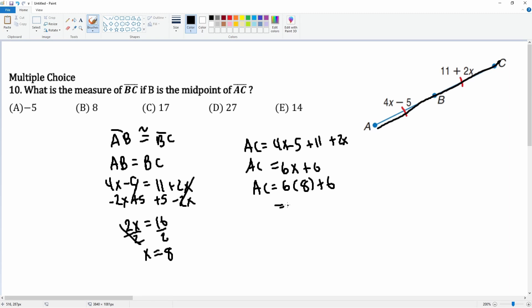6 times 8 is 48 plus 6 is 54. That's what AC is. No, that is not right. Hold on.